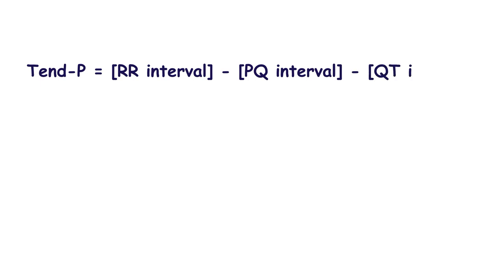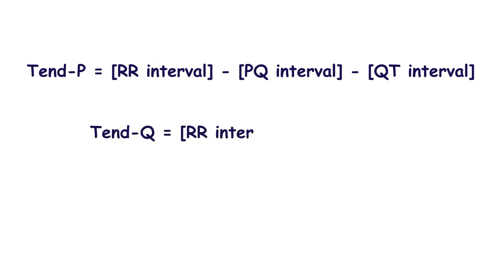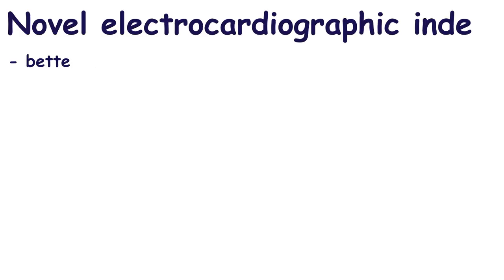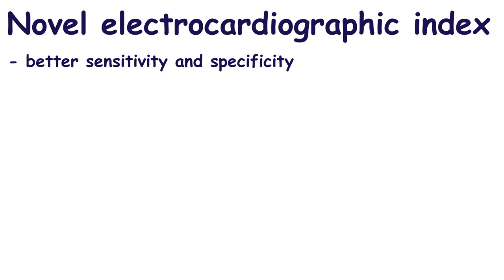Also, TpP may be calculated as the RR interval minus the PQ interval minus the QT interval. And TpQ may be calculated as the RR interval minus the QT interval.